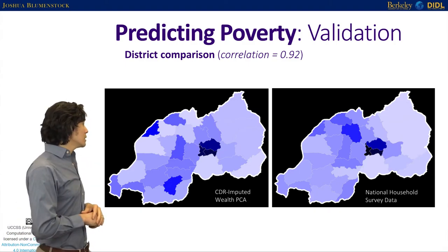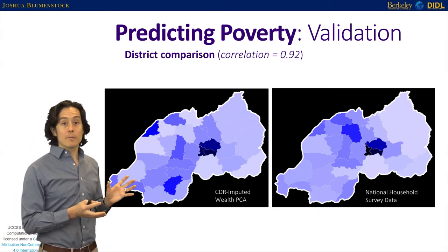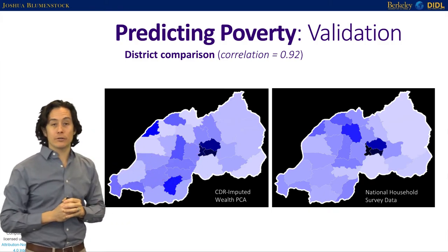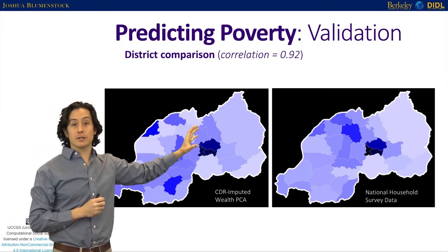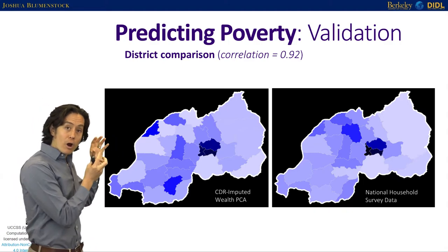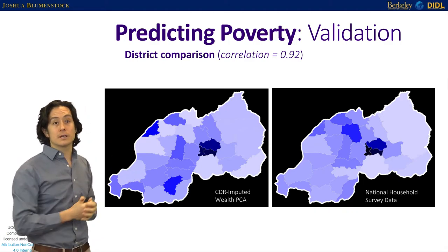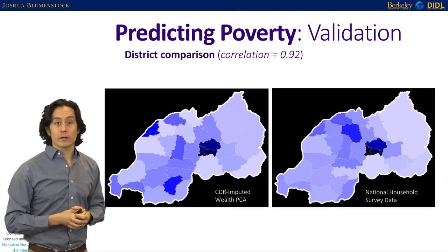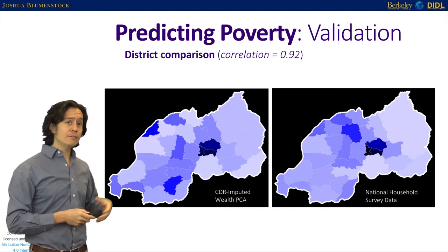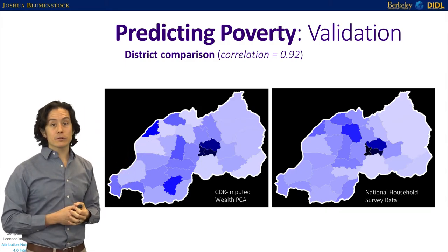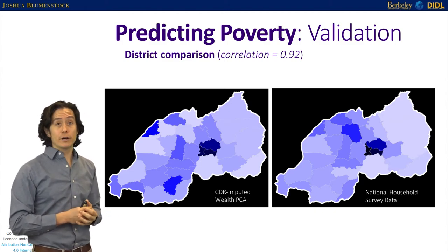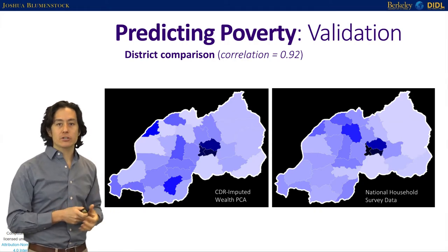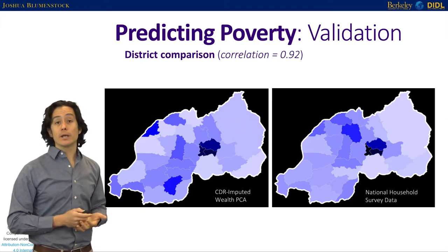We can validate our estimates by comparing to what the National Institute of Statistics of Rwanda says the wealth distribution is — data they spend millions of dollars on household surveys to collect — against what our algorithm estimates from call detail records. Visually, the maps look fairly similar, and when you quantitatively compare them, the correlation is actually quite high: 0.92.